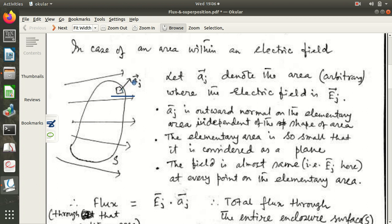Then, this A, J vector denotes this particular area and A, J vector is perpendicular to this area. And at that point of time, point in space, we consider that the field is E, J. That means, J by J, J sub J index, we denote the Jth part of elementary area.